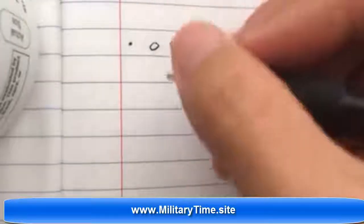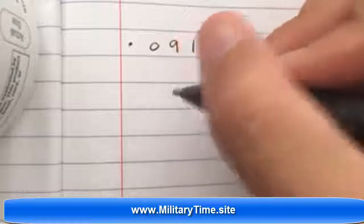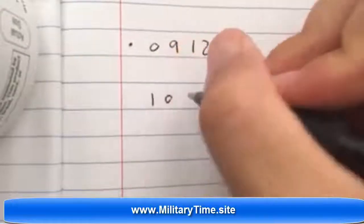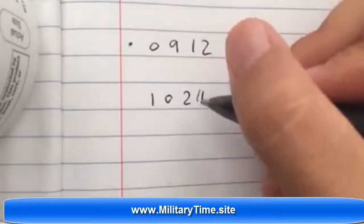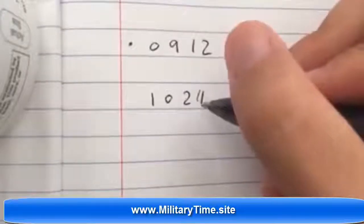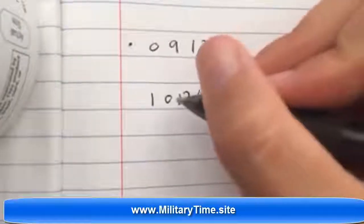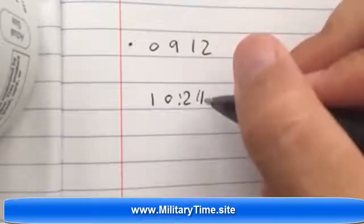So anytime before 12, let's say it's 10 a.m., then it's 1024. This is still normal time. It's military time and it's regular time. It's the same.